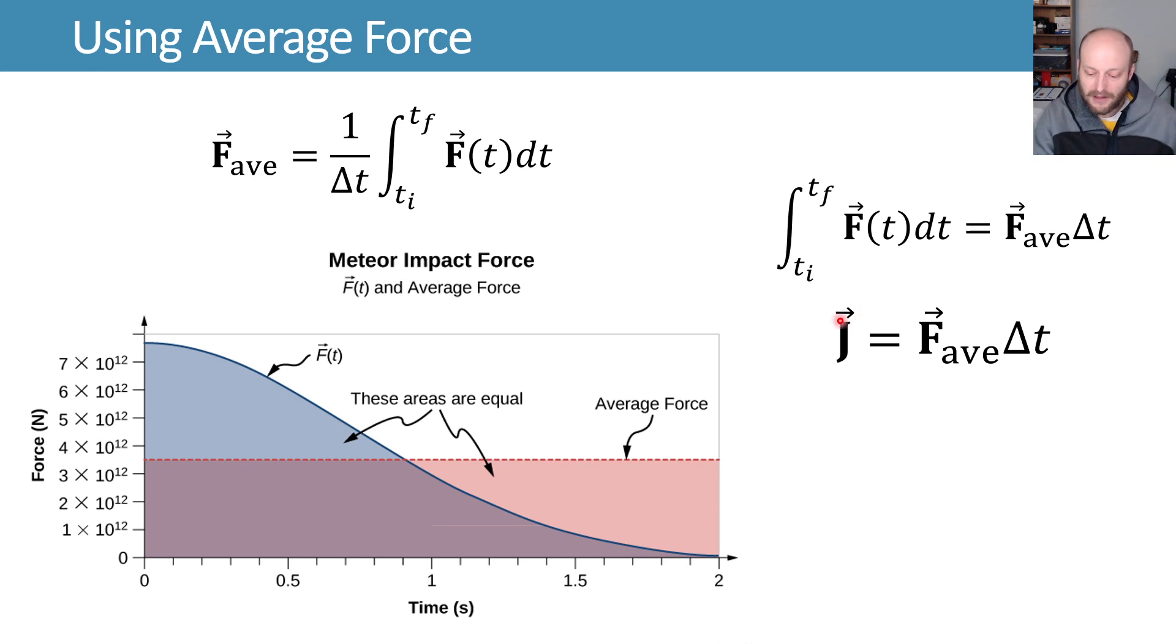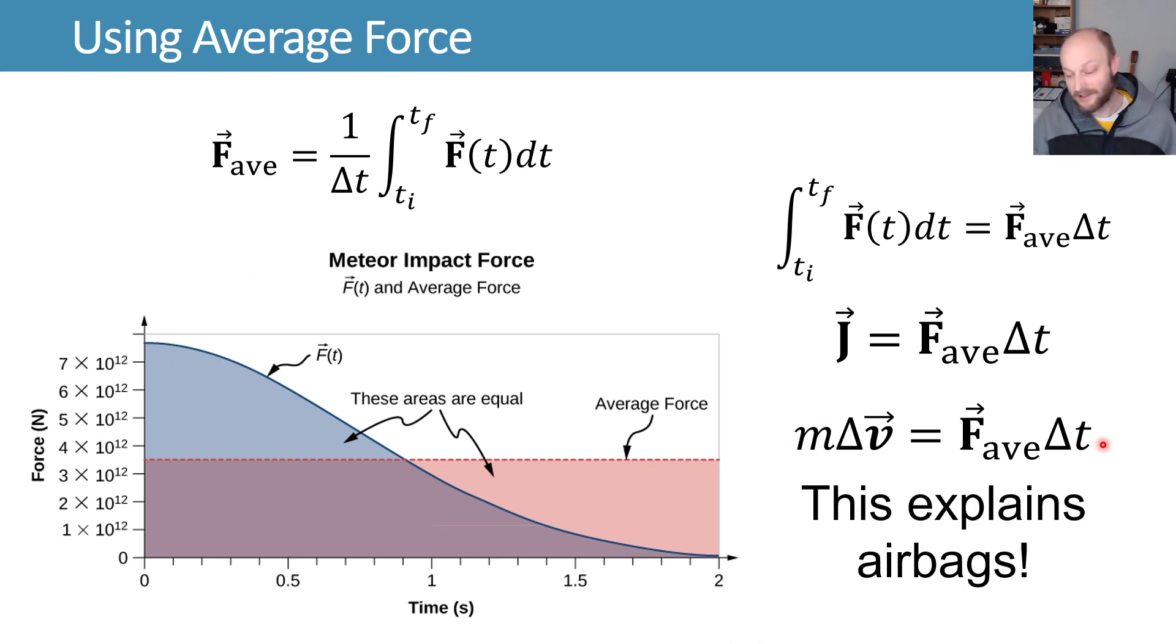We can replace this impulse with, since we've said that the impulse is equal to the change in momentum, we can say that that is now equal to my change in momentum, m delta v, assuming that we have constant mass. And this right here is pretty powerful and explains a lot of things. For example, airbags.